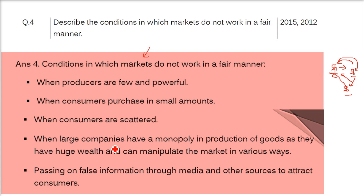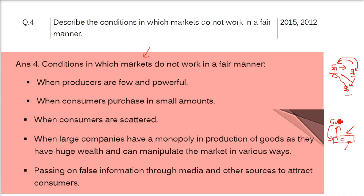When large companies have a monopoly in the production of goods, they have huge wealth and can manipulate the market in various ways. Big giant companies have crores in revenue, and sometimes the government also receives donations from them, so policies are made to benefit these companies. Even if something comes under suspicion — that the company is doing something wrong — the nexus between these two institutions makes it very difficult to make the company pay for its wrongdoings. Because of their power, monopoly, and money, the market sometimes does not work in a fair manner.